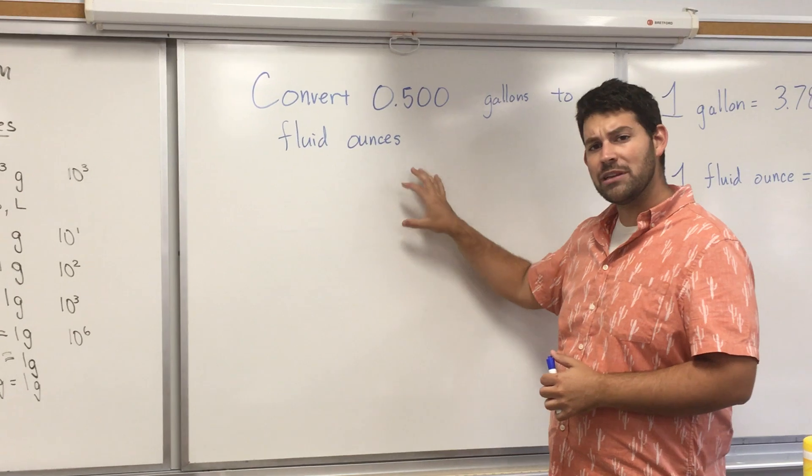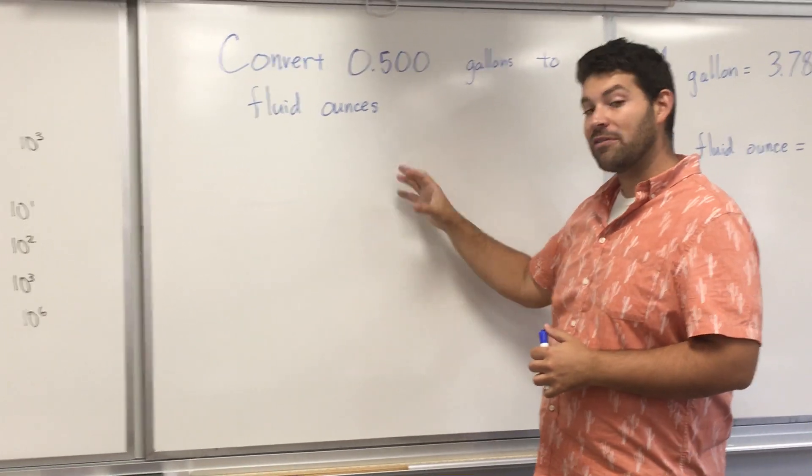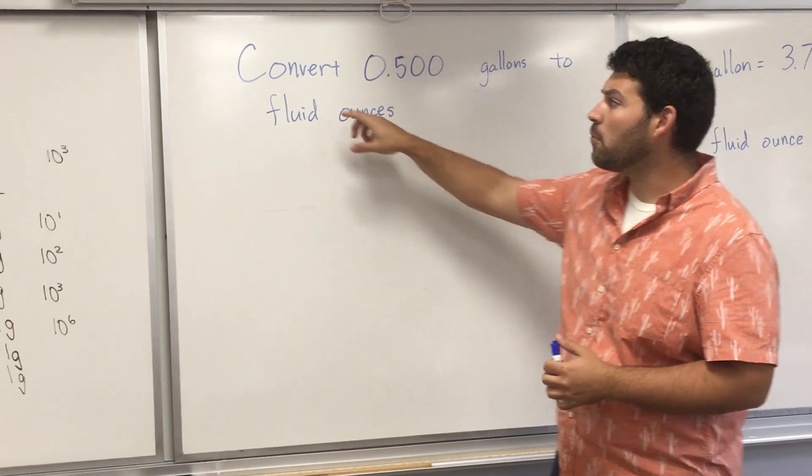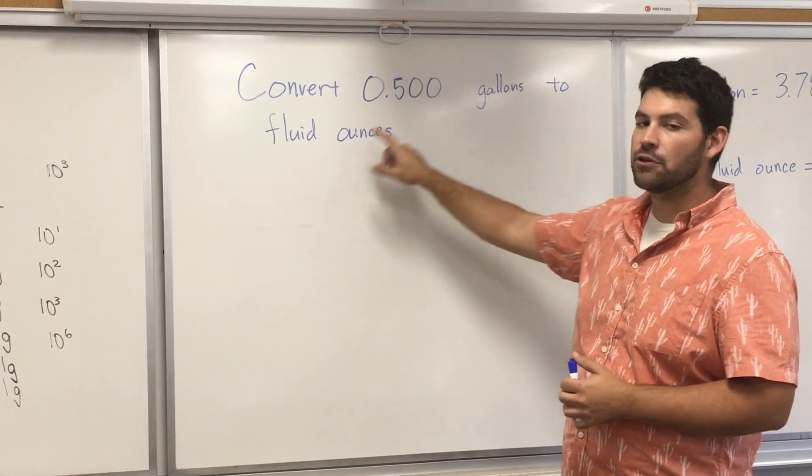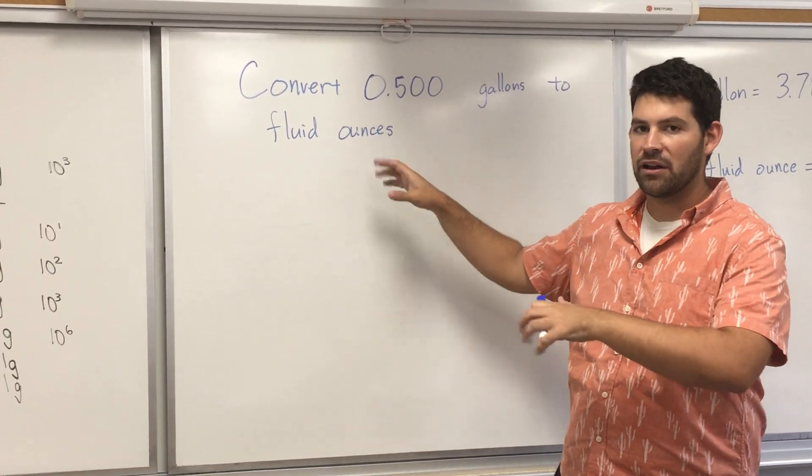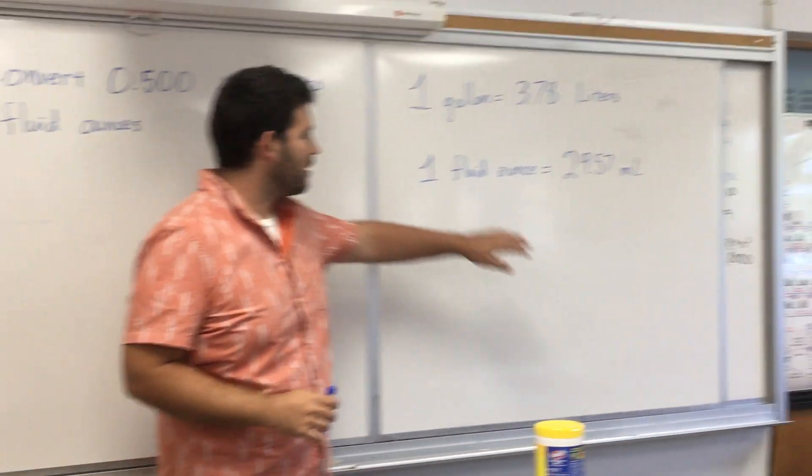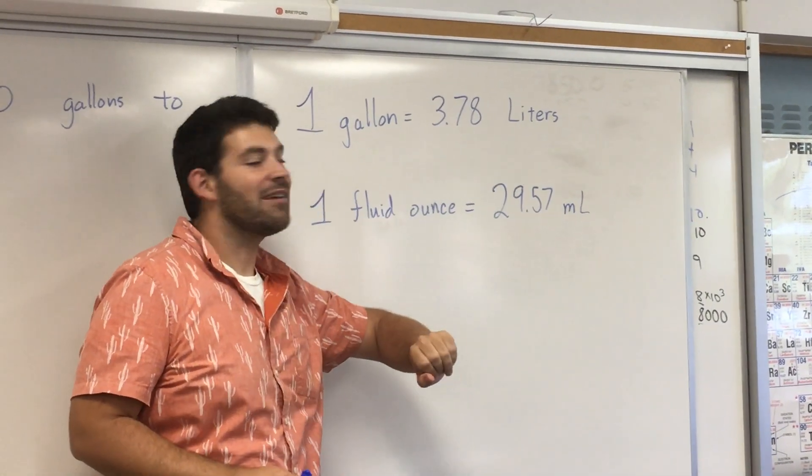This problem is truly dimensional analysis. We'll be setting up multiple equivalence factors to solve it. So the problem we're doing, we are going to convert 0.500 gallons to fluid ounces. Now a lot of stuff going on. We have information to help us there. We know that one gallon equals 3.78 liters.